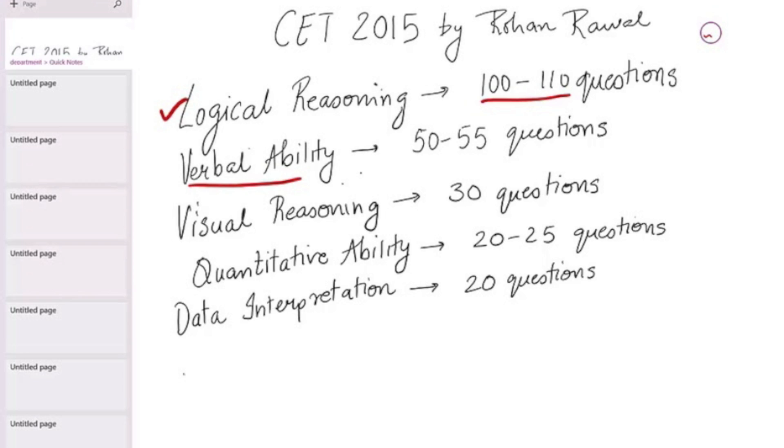The next one we have on the list is verbal ability, which is around 50 to 55 questions, which is again a significant one because 50 questions is around 25%.